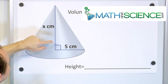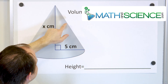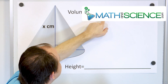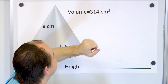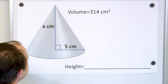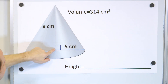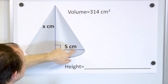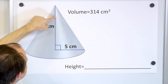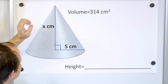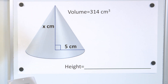I'm going to tell you ahead of time that the volume of this cone is 314 cubic centimeters, but the radius of the base is 5, and I'm asking you to tell me what the height is. We'll have to reverse engineer what the height is.